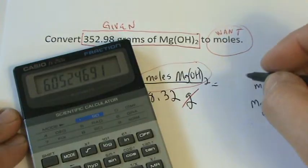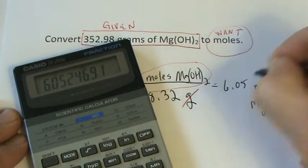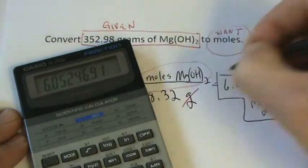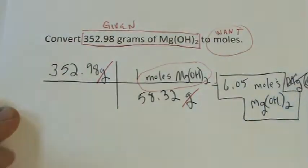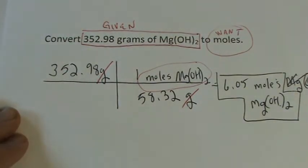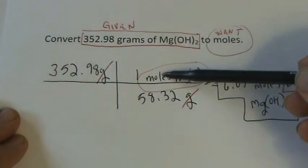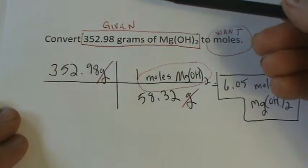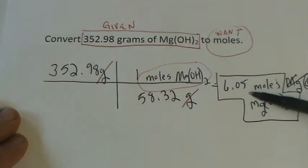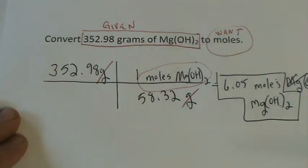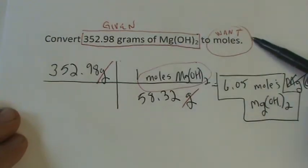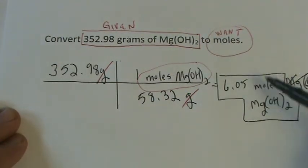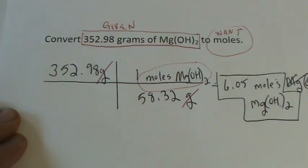We end up with 6.05 moles of Mg(OH)2, and let's check and see if that makes sense. Well, if one mole is about 50, 50 goes in here six or seven times, pretty close to six. So I think that's a reasonable answer. We've gone from grams to moles using the GFM as a conversion factor, canceling out, and then checking to see if our answer is reasonable.